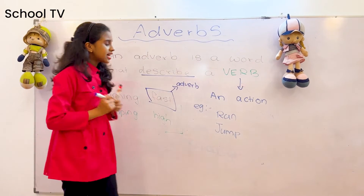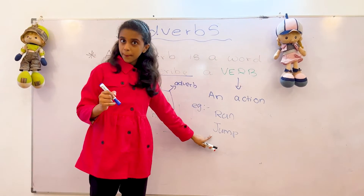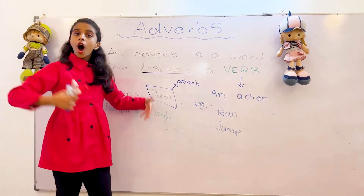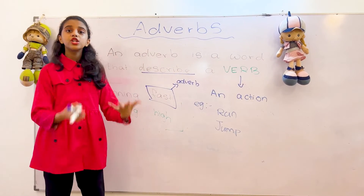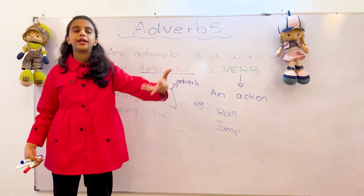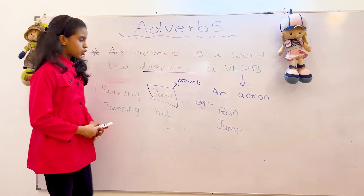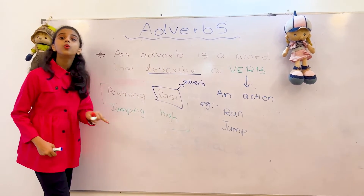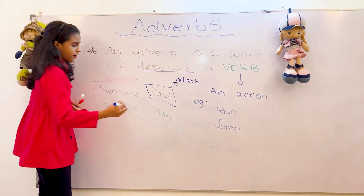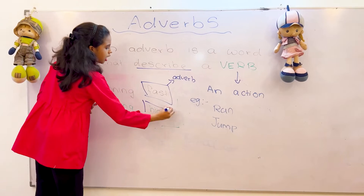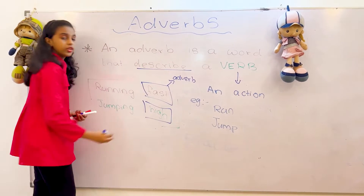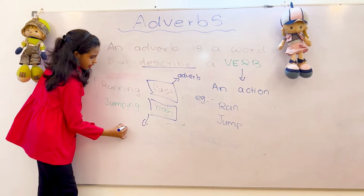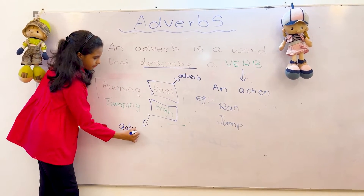So the next one: jump. Jumping high. How is he jumping? Jumping high. So for us to describe the word jumping, we have used high. So the word high is the adverb.